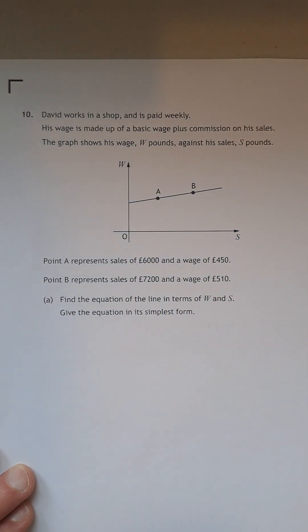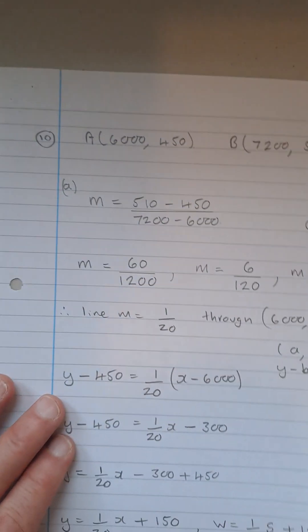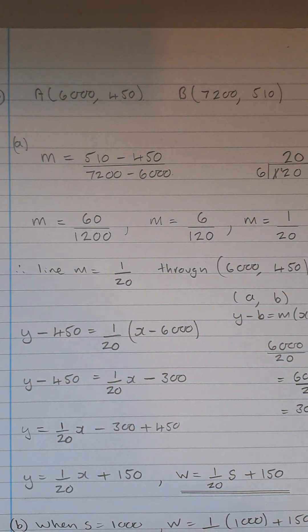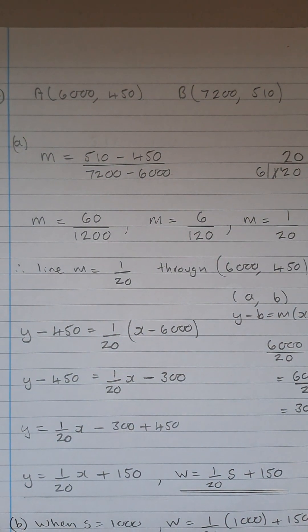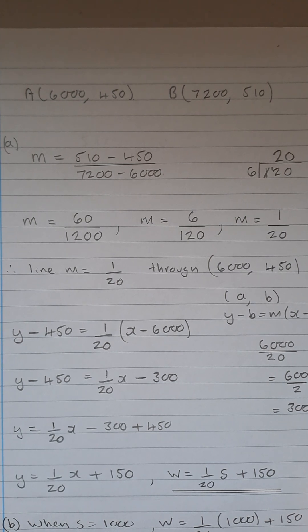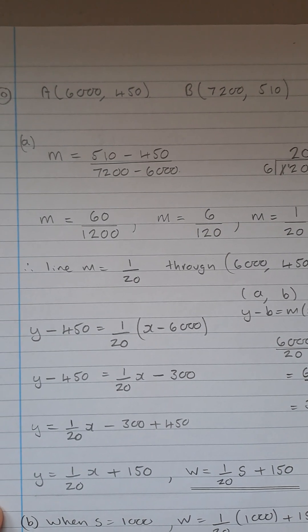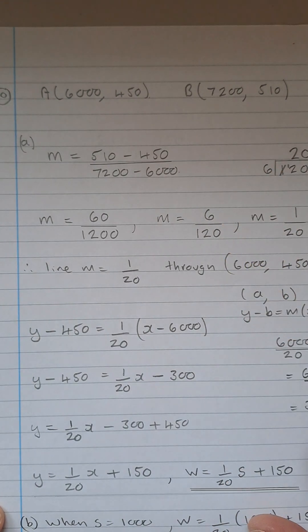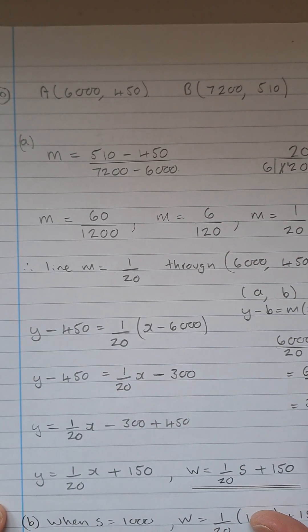Find the equation of the line in terms of W and S. So for this one here, let's get to the working there. Okay, so we have A being the point 6,450, and B is the point 7,200, 510. So these numbers are quite big, normally not quite as big as this for this type of sum. Nevertheless, let's get on with the gradient here.